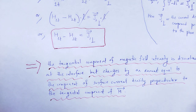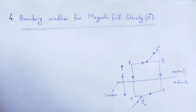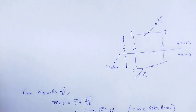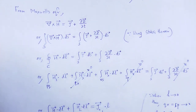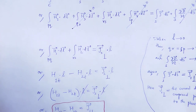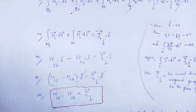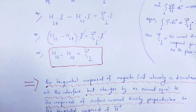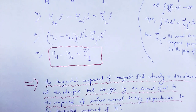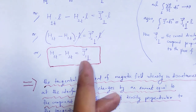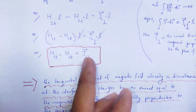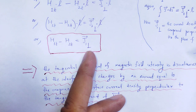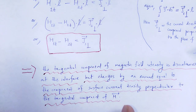With this speedy lecture, we understand the boundary condition for magnetic field intensity using Maxwell's equations. From Maxwell's equations, we obtain that the tangential component of magnetic field intensity is discontinuous at the interface, and the discontinuity equals the component of surface current density J perpendicular to the tangential component of H.